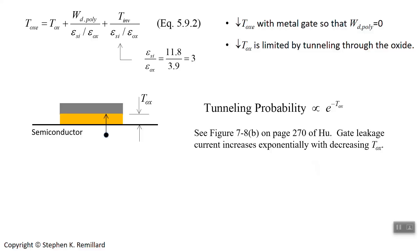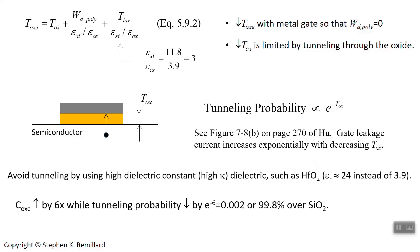One way to get a large oxide capacitance without making the dielectric really thin is to use a high kappa material such as hafnia. That's what is being used commercially because it has a dielectric constant of 24, which is 6 times higher than that of silicon dioxide.